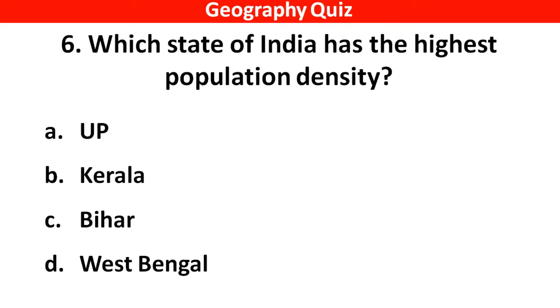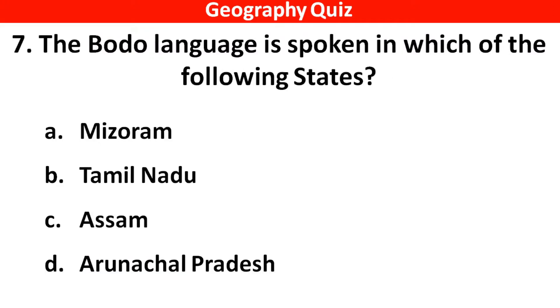Which state of India has the highest population density? Right answer is option D — West Bengal.